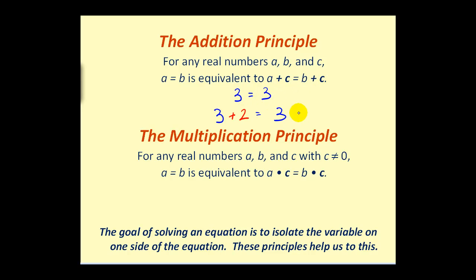So if we added 2 to both sides of the equation it would still be true because we'd have 5 equals 5. Now notice it only says addition but of course we could add a negative which would be the same as subtracting a number on both sides.